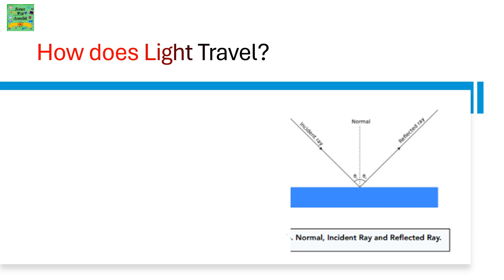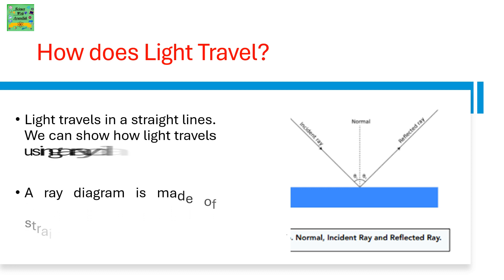How does light travel? Light travels in a straight line. We can show how light travels using a ray diagram. A ray diagram is made of straight lines with arrows. The arrows show the direction in which the light travels.